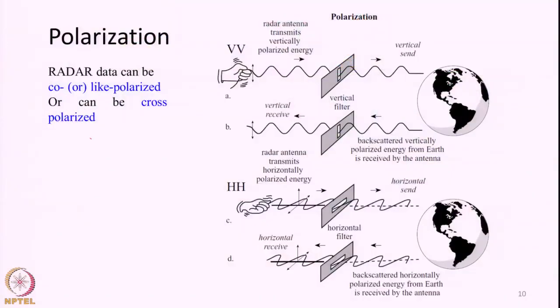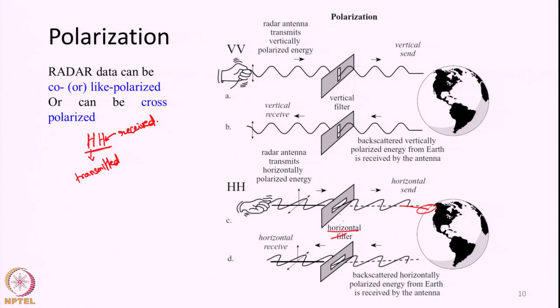Let us say we have a system that can transmit electromagnetic radiation only in horizontal polarization — we indicate it with the label H. The system transmits only in horizontal polarization, moves toward the object, gets reflected, and comes back. Let us say the system also receives only EMR that is horizontally polarized. So the first H indicates the polarization of the wave that is received. HH indicates the system transmitted horizontally polarized microwaves, which go to the earth surface, interact, and whatever signals come back — the system allows only the horizontally polarized ones.